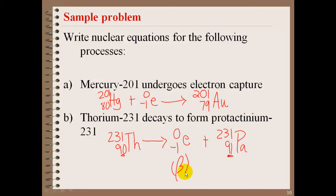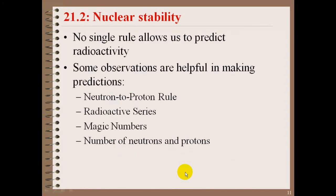Nuclear stability, there's no single rule that allows us to predict radioactivity. Some observations are helpful in making some predictions. There is the neutron to proton rule, a radioactive series, magic numbers, or number of protons and neutrons.